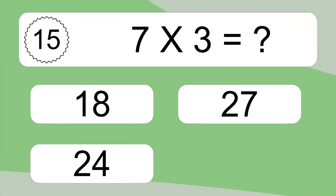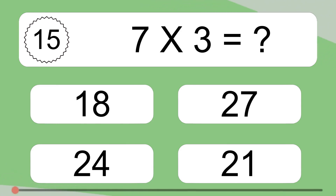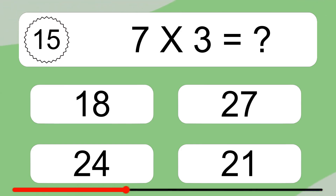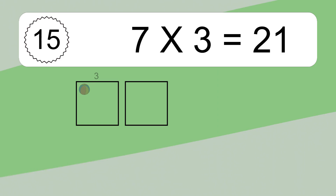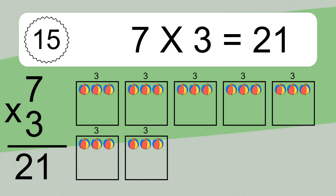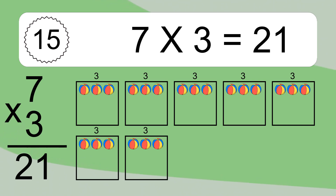7 times 3 equals what? 7 times 3 equals 21. We have 7 boxes, and each box has 3 colorful balls inside. If you count all the balls in all the boxes together, you will have 7 times 3 balls. This equals 21 balls.